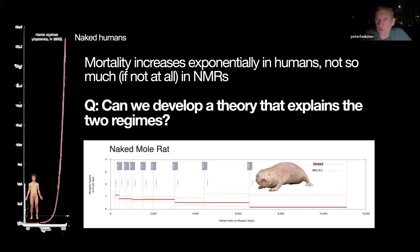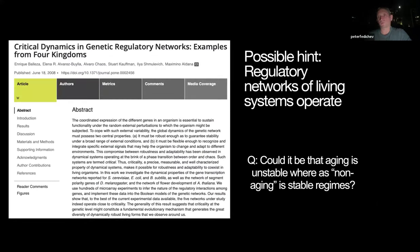If we ever want to increase human lifespan by a large margin without doing trials and errors, we should have a theoretical framework to understand how the human mortality curve is different from the naked mole rat curve. My interest was twofold: I learned about these creatures, and at the same time I was reading works by Stuart Kauffman while doing physics of strongly correlated systems.